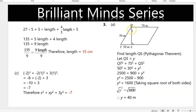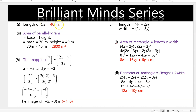Looking at the figure, we need to find length QS. We know QT and TS, so we use Pythagoras' theorem. Let QS equal y. QT squared plus TS squared equals y squared. Substituting values gives 2500 equals 900 plus y squared, so y squared equals 1600. Taking the square root of both sides gives y equals 40 meters, so QS equals 40 meters.